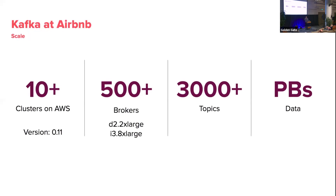Airbnb has one of the largest Kafka deployments on top of AWS. We have more than 10 Kafka clusters — we spin up dedicated Kafka clusters for different use cases — and they are on version 0.11 right now. We're also testing the latest version in our testing cluster, hopefully rolling it out next month. We have over 500 brokers in total. Most clusters use the D2 instance type, and for high-throughput clusters, we use i3, which has SSDs and higher network bandwidth. We have more than 3,000 topics, handling over a petabyte of data per day.